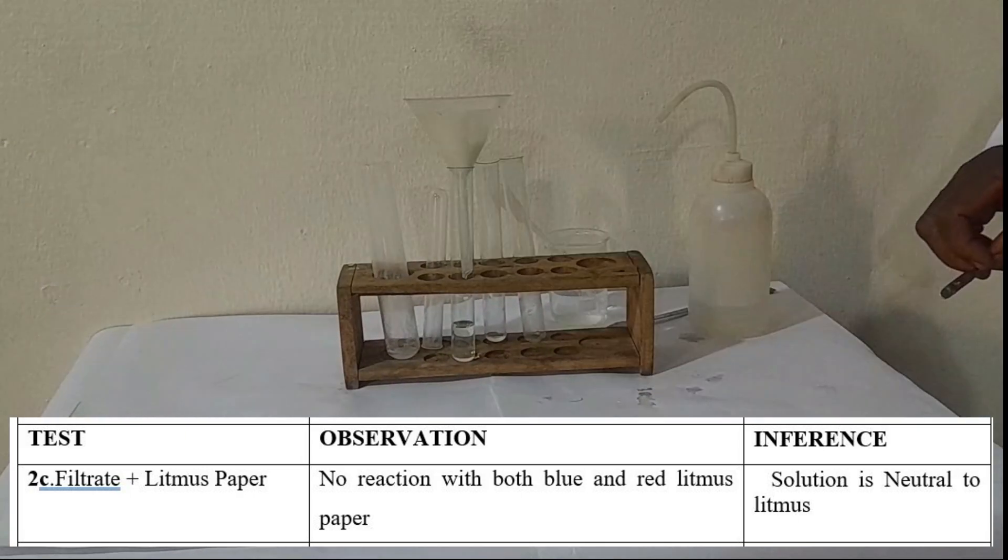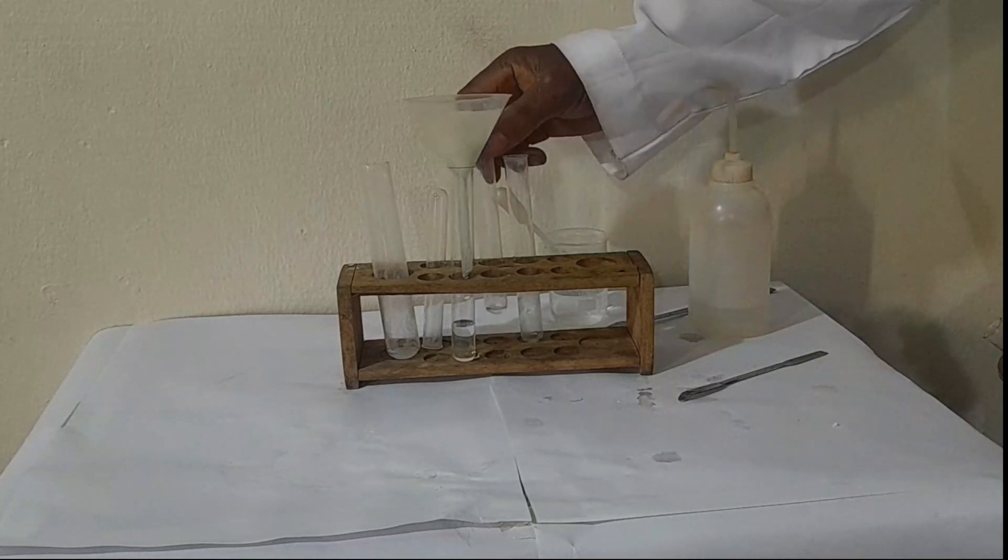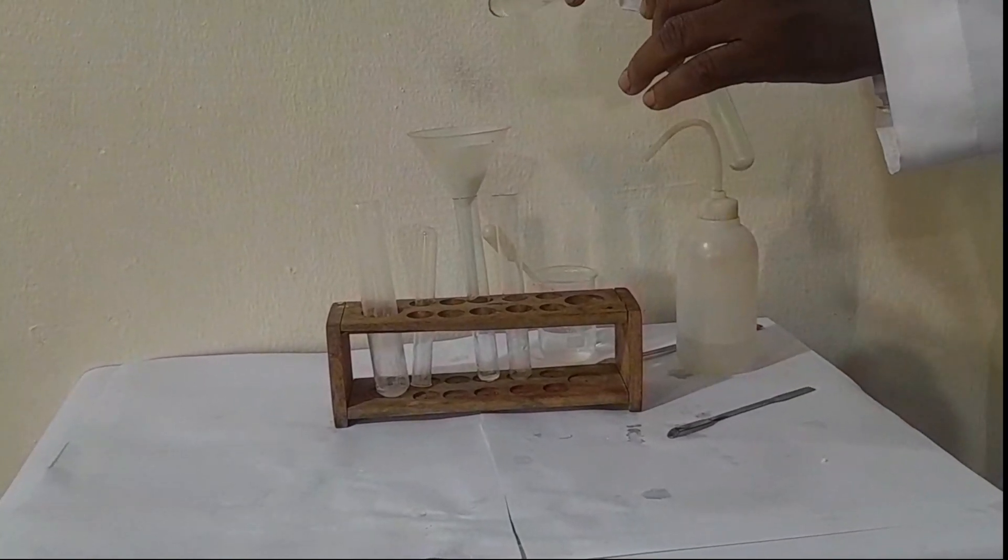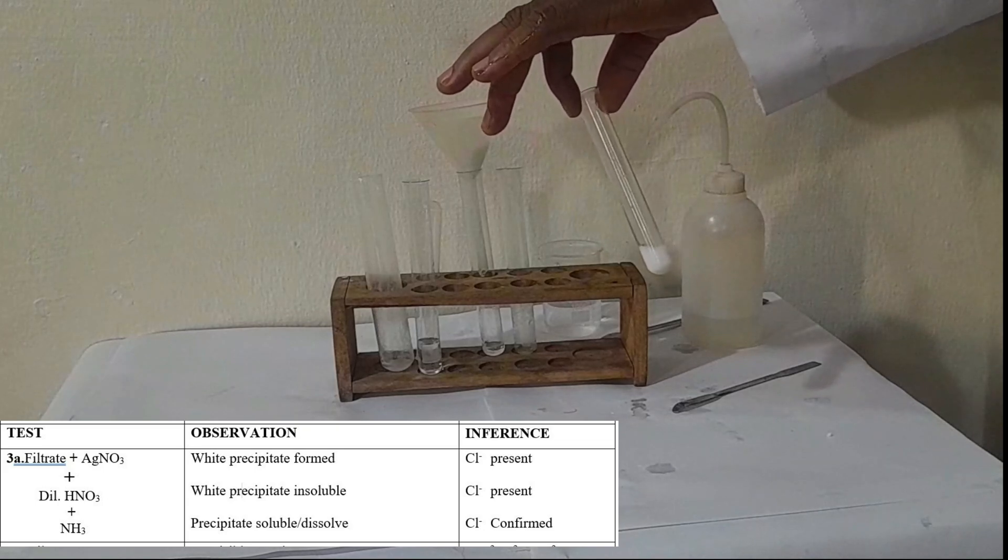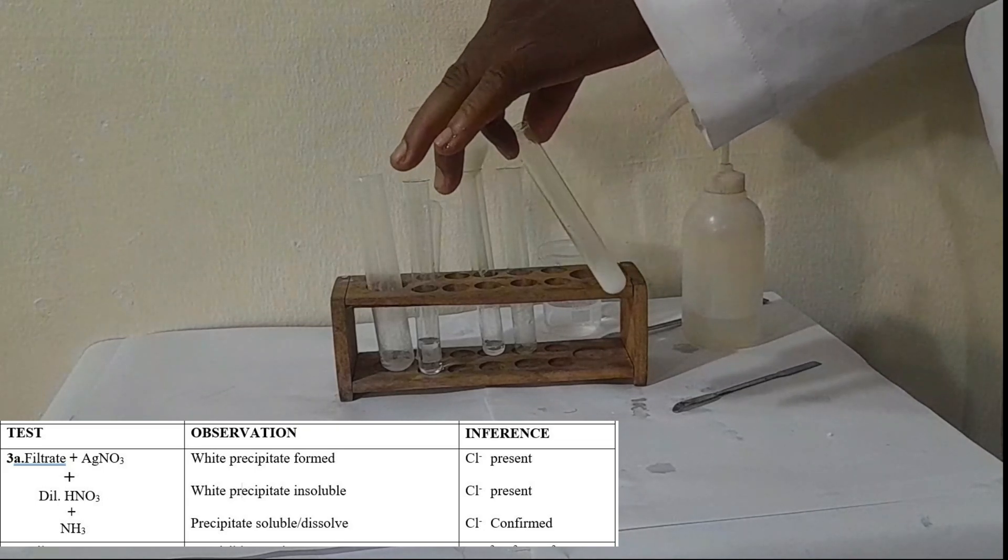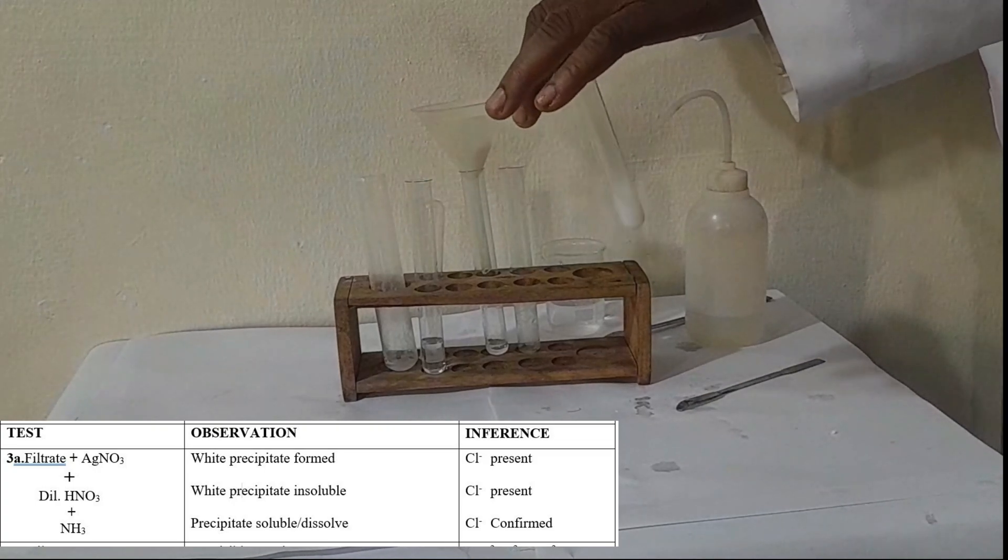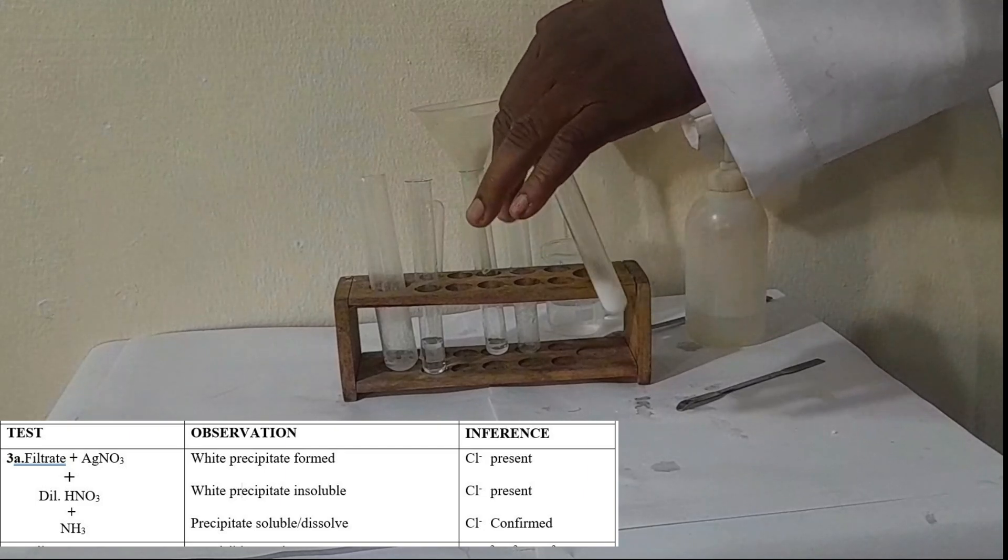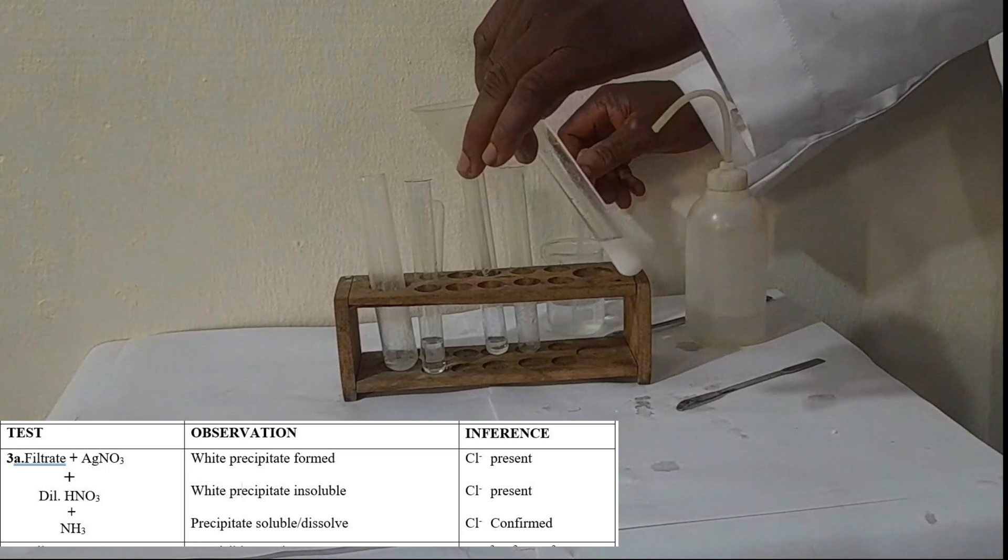A portion of the filtrate plus HNO3. Let's take a portion of the filtrate and test with HNO3. You can see a white precipitate forms. White precipitate, what is present? Of course we have a chloride ion present. Let's add HNO3 to the solution. The precipitate will remain, there will be no reaction.